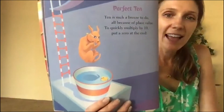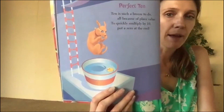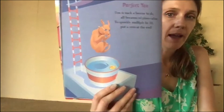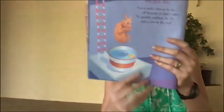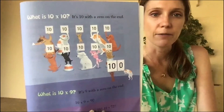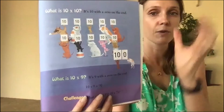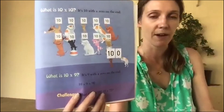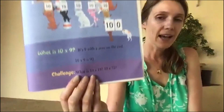Perfect ten: 'Ten is such a breeze to do, all because of place value. To quickly multiply by ten, put a zero at the end.' It seems like just a trick, but really we're increasing the place value by a whole digit. What's 10 times 10? It's 10 with a zero at the end — we had 10, with one more zero, bumped into the next place value.